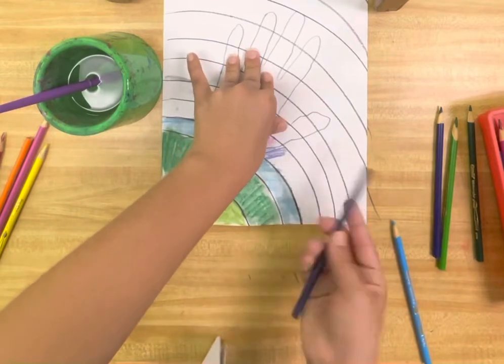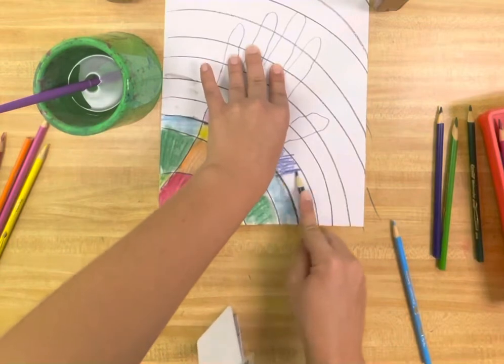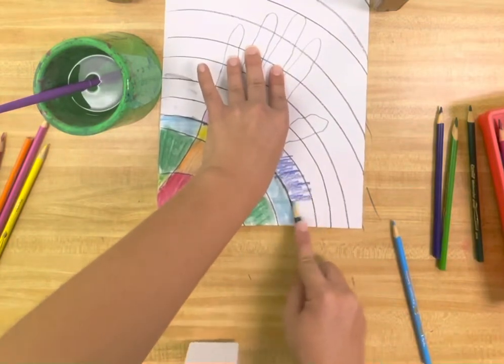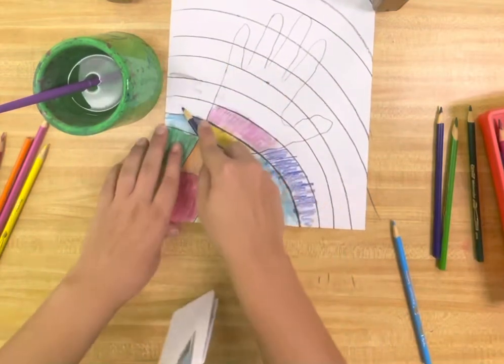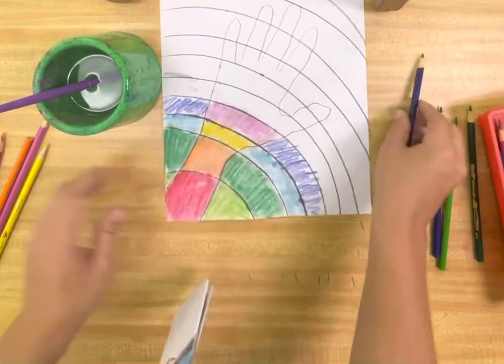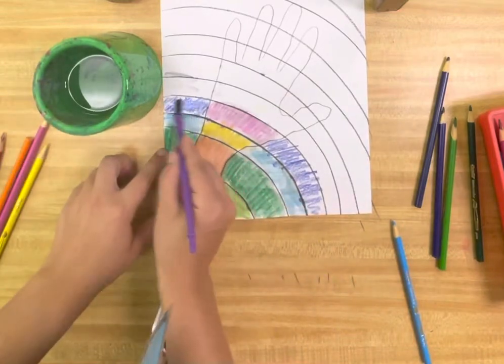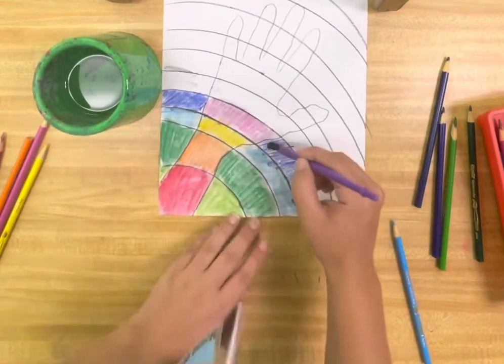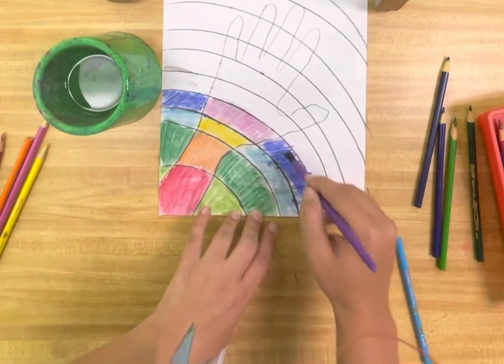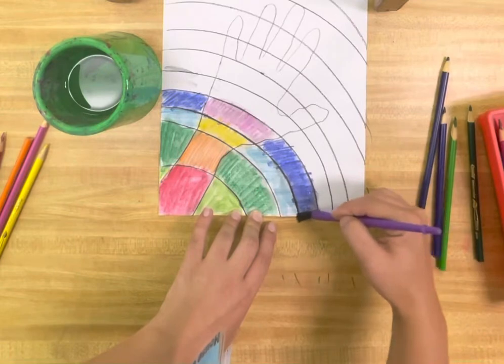Oh, this might be more of a purple. Well, it says it's blue, but it kind of looks purple to me. It's like a royal blue. The darker and harder you press, the darker your color will be. There we go.